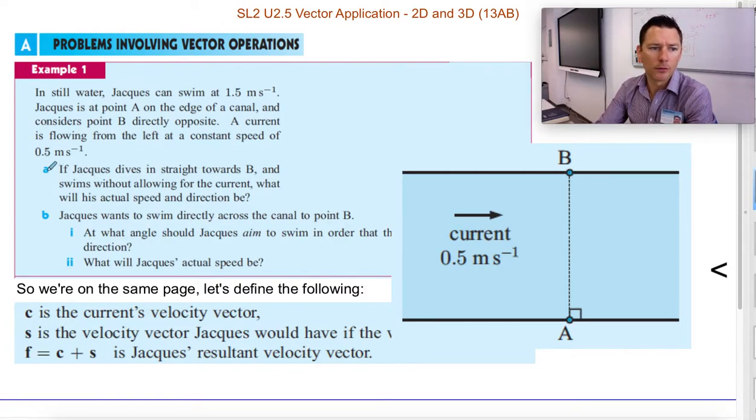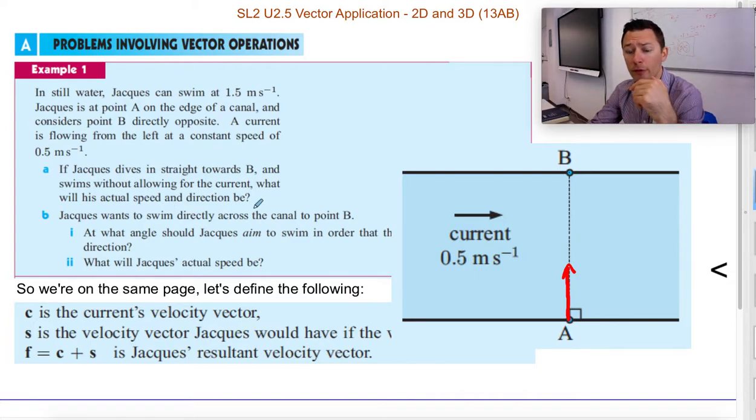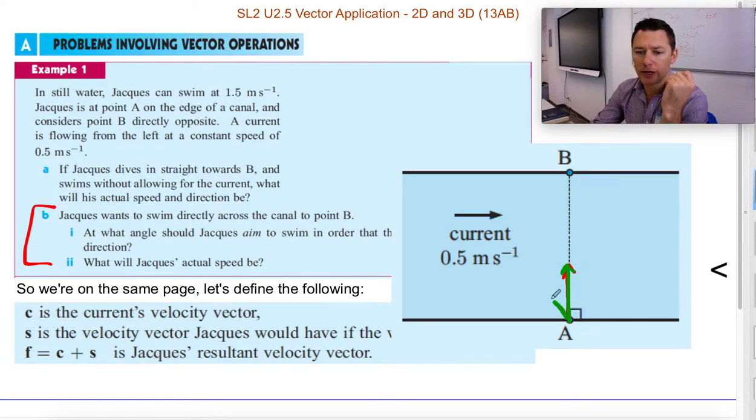So we're going to tackle this in pieces. The first part is if Jacques swims straight or points straight, not swims straight, points his body straight, which way does he actually move, which way does his body move because of this drift, and how fast is he going to go? So we're going to tackle that first, and then we want to know if he actually wants his body to move in a straight line, which way does he have to point so the drift makes him go straight?